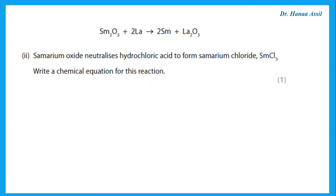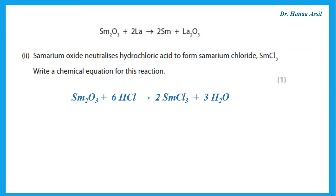Samarium oxide neutralizes hydrochloric acid to form the chloride. Write a chemical equation. We are given the formula of samarium oxide, and it reacts with hydrochloric acid to give samarium chloride plus water — this is a metal oxide reacting as a base with an acid: base with acid gives salt plus water. Make sure you balance the equation before moving on. A chemical equation means it must be in symbols and balanced.